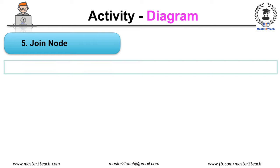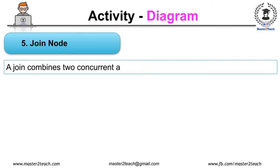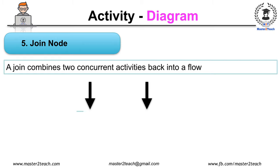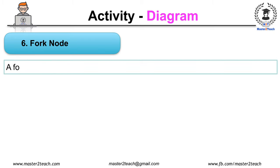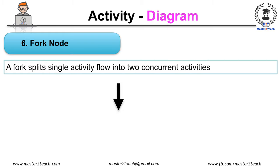Join: a join combines two concurrent activities back into a flow where only one activity is happening at a time, which is represented as shown in the figure. Fork: a fork splits single activity flow into two concurrent activities which are represented as shown in the figure.